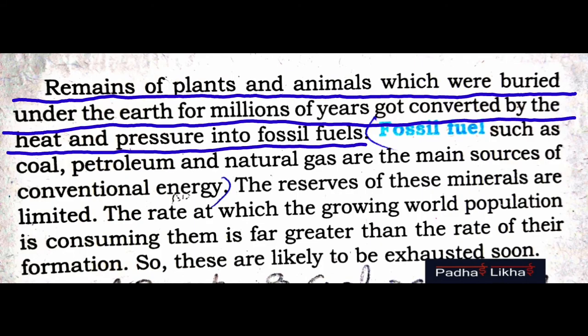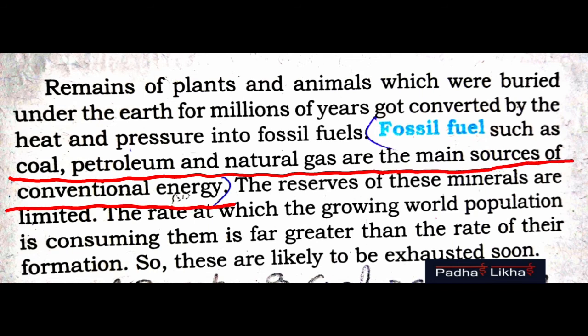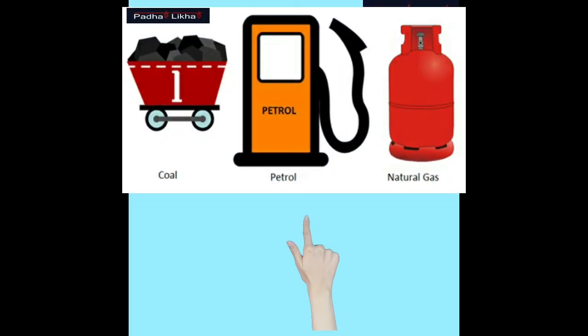Now let's talk about fossil fuels. Remains of plants and animals which were buried under the earth for millions of years got converted by heat and pressure into fossil fuels such as coal, petroleum and natural gas. They are the main sources of conventional energy. We will study coal, petroleum and natural gas in detail in the next part.